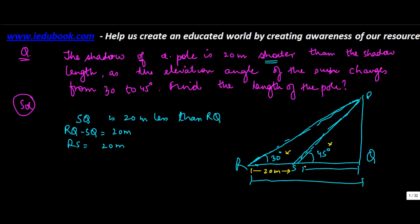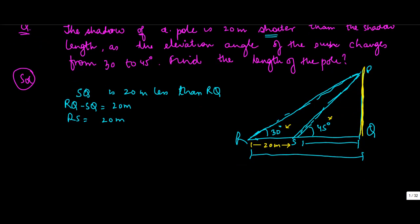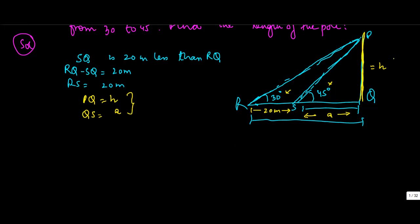You know the two elevation angles and you have to find out PQ. Let's say PQ is equal to H, and let's also say that QS is equal to some variable A. You need to find out PQ, and the only thing that you know is this side, so what is the relationship between these two sides in terms of trigonometric ratios?